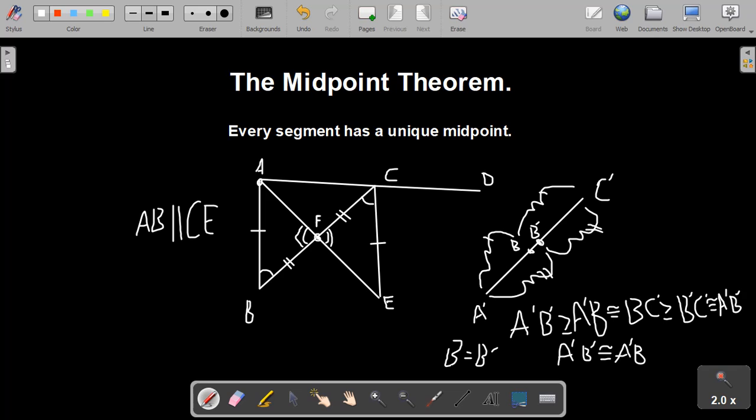Therefore, B is the only unique midpoint of A prime, C prime. So we proved over here that midpoints exist. There's at least one midpoint in every segment. And we proved over here that there's no more than one unique midpoint of any segment. And that is the midpoint theorem. Thank you for watching.